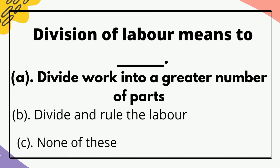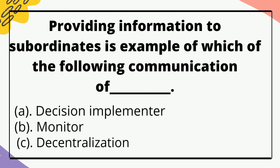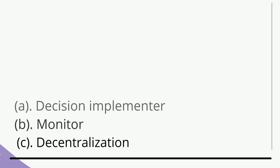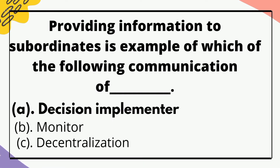Division of labor means — the correct option is to divide work into a greater number of parts. Providing information to a subordinate is an example of which of the following communication rules — the correct option is decision implementer.